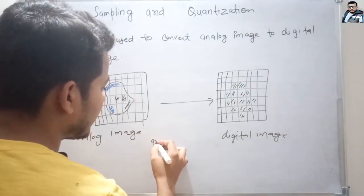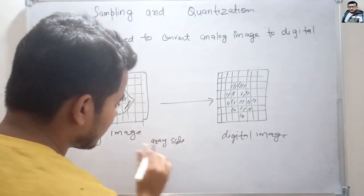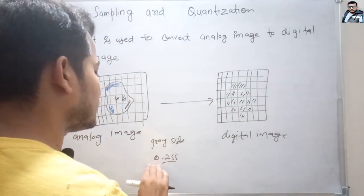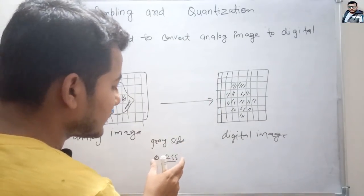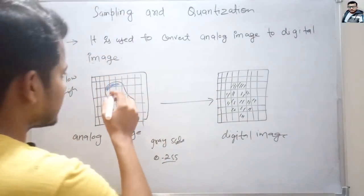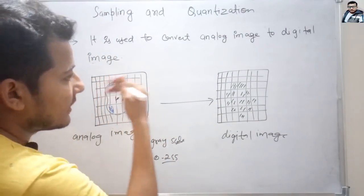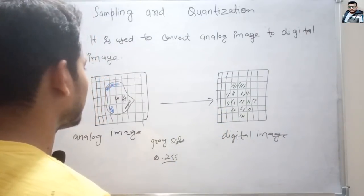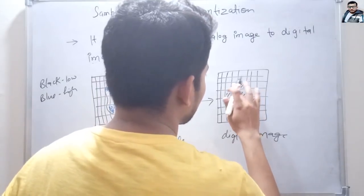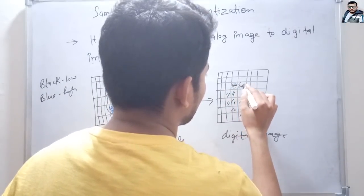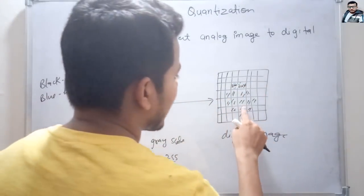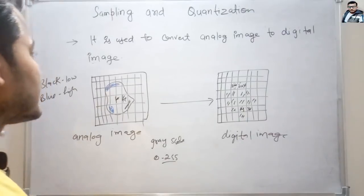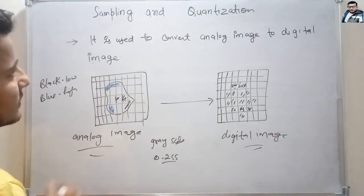In quantization, for a grayscale image we have pixel values from 0 to 255. The assignment of these values is done in the quantization step — high intensity areas will have higher pixel values and low intensity areas will have lower pixel values. For example, here the high intensity area might have a value of 200 to 244, and the low intensity area might have values like 34 or 56. After applying these two steps, we have the digital image. Thank you friends.